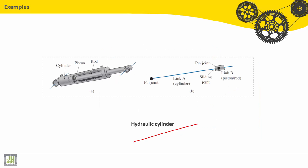Hydraulic cylinder. For this example we have the slider here and the cylinder. The slider has this rod connected to the piston. The piston is really the slider. We can see here the pin joint, and we have a pin joint between the rod and the piston.